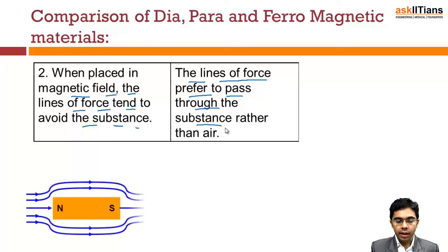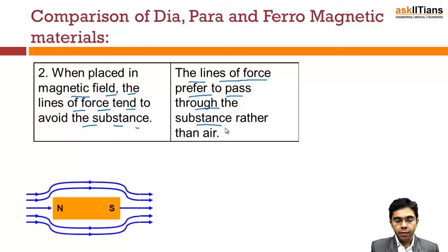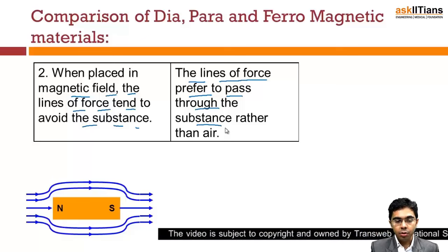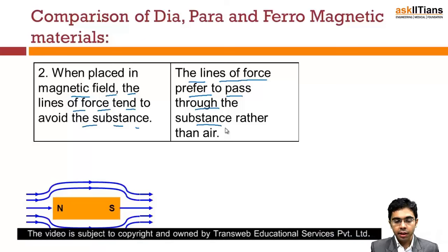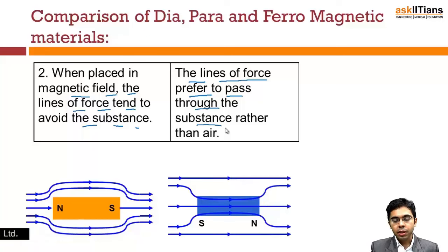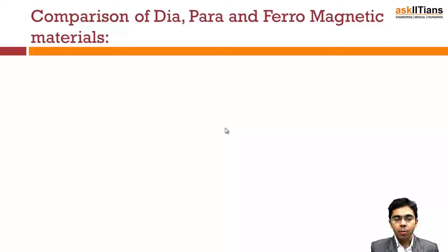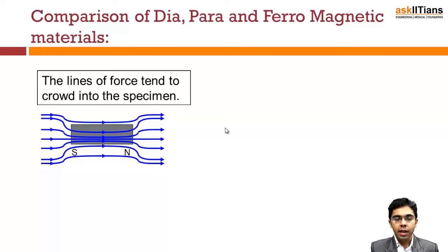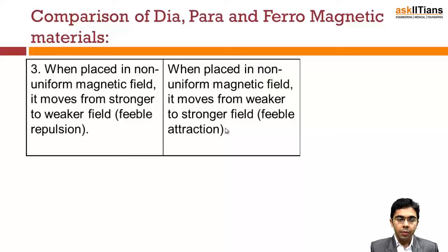Visually, if a diamagnetic material is placed in the field, the lines curve away from it. If a paramagnetic material is placed in the field, the lines tend to go through the material. For ferromagnetic materials, all the lines of force crowd into the specimen.